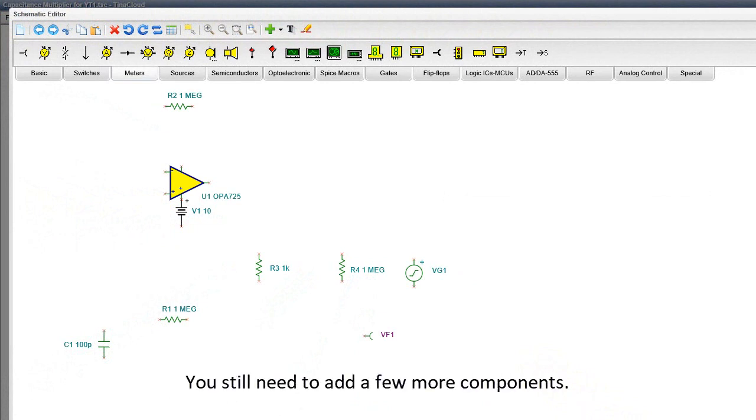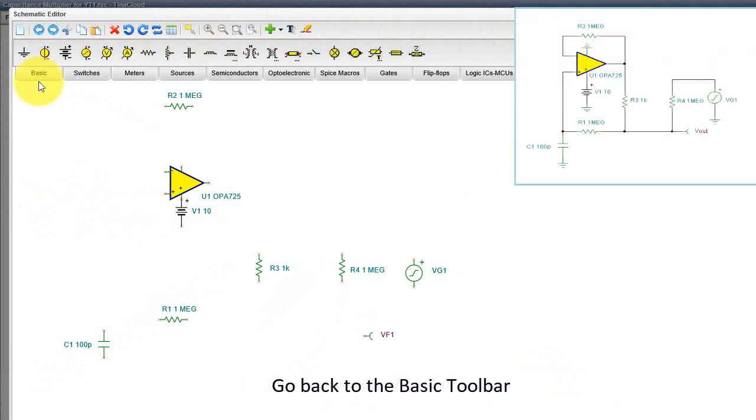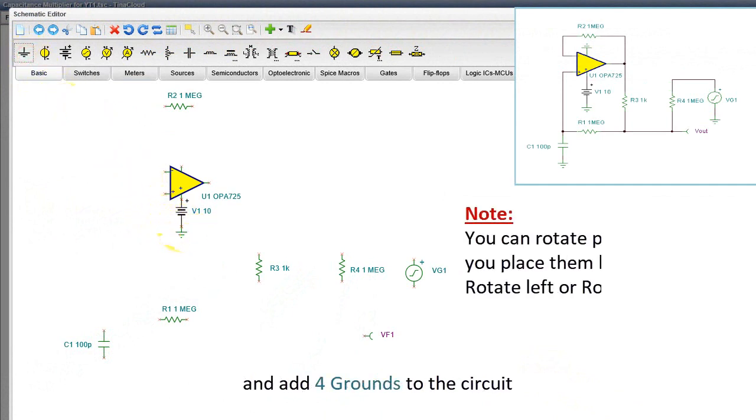You still need to add a few more components. Go back to the basic toolbar and add 4 grounds to the circuit. Note, you can rotate parts even before you place them by clicking the Rotate Left or Rotate Right symbol.